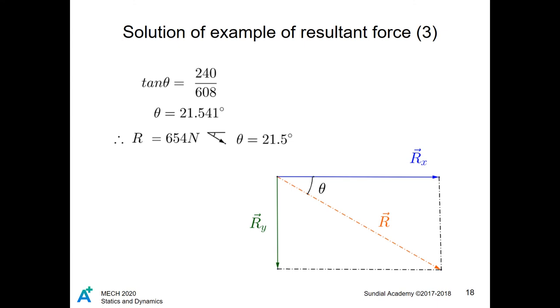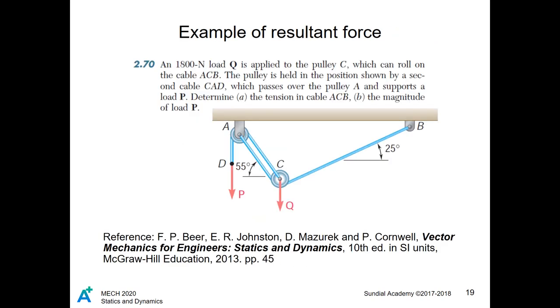The vector angle is found using trigonometric ratios again on the final vector, specifically taking the arc tangent of the tangent ratio of the vector components. Now, let's do a real-life example of a resultant force problem.